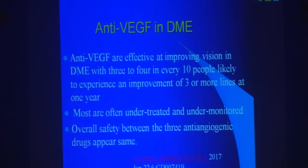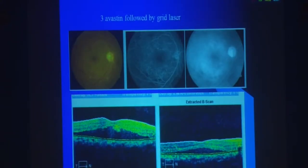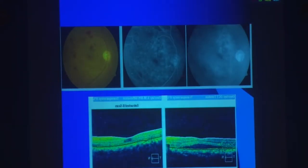A 58-year-old male — everything was wrong with him. Put on strict metabolic control; the fluid came somewhat down. Then subsequently we gave 3 injections of Avastin followed by a grid laser, and everything kept going down. In such a situation, where you have such a bad picture, if you don't do everything possible it's not going to work. Regarding corticosteroids: considered an essential adjunct for treatment of refractory and persistent DME. Efficacy is comparable to anti-VEGF in pseudophakic eyes, and used as an adjunct for cataract surgery worsening in DME. The problems are cataract and raised intraocular pressure.